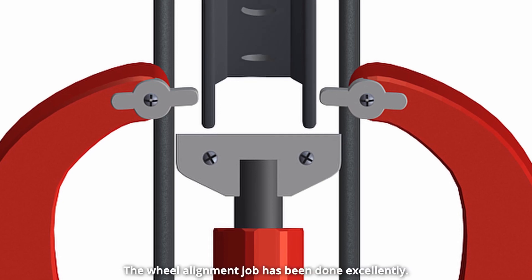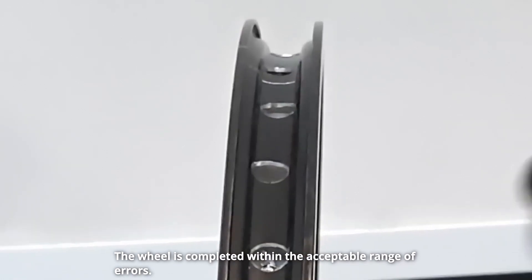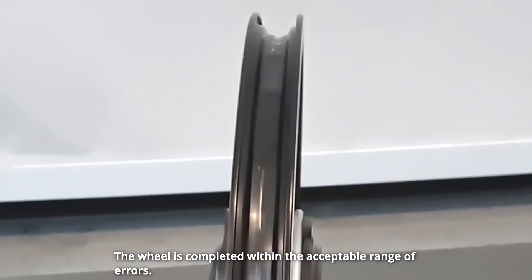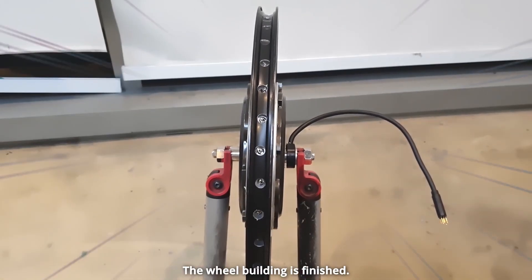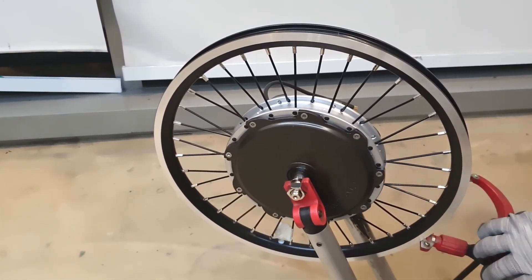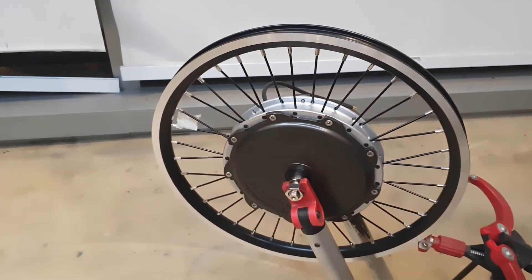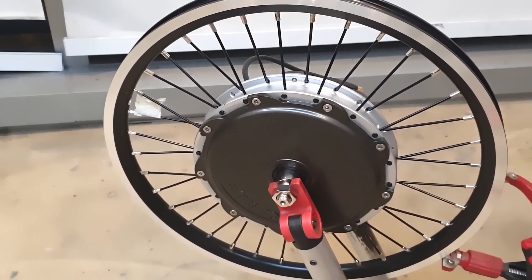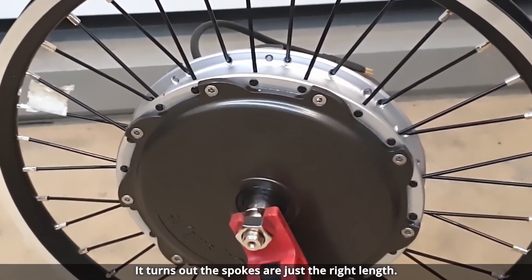The wheel alignment job has been done excellently. The wheel is completed within the acceptable range of errors. The wheel building is finished. It turns out the spokes are just the right length.